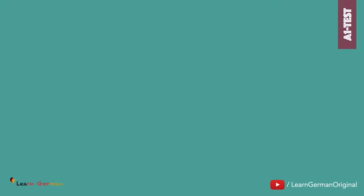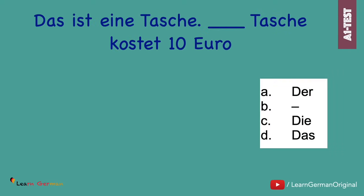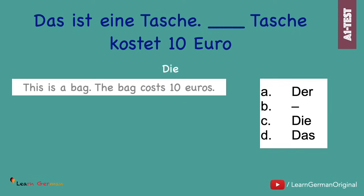Here's the fourth one. Das ist eine Tasche. Die Tasche kostet zehn Euro. You have to fill in the blank with the correct article. And the answer is: Das ist eine Tasche. Die Tasche kostet zehn Euro.